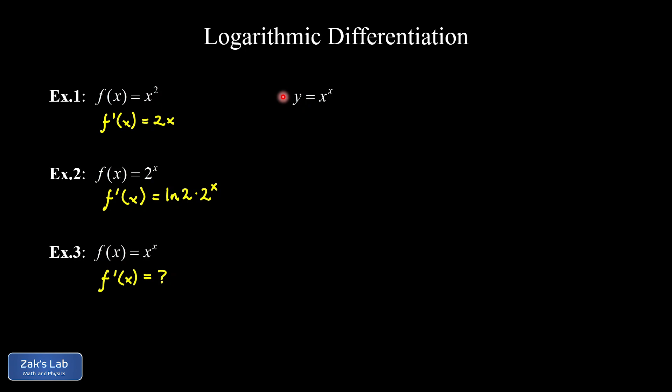The function we're trying to differentiate is y = x^x — a variable raised to a variable power, which is the signature of functions where you'd want to use this technique. To deal with that problematic exponent, we take the natural log of both sides. Now we have ln(y) = ln(x^x). The whole point of doing that is that natural logs have a really nice property: that x in the exponent can be brought down as a factor out in front. So now we want to find dy/dx.